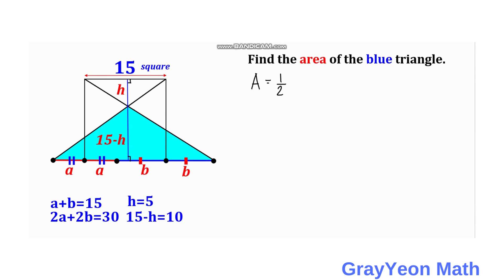the base is actually equal to 2A plus 2B times the height, which is 15 minus H. That equals 1 half times 30 times 10, which equals 150 square units.